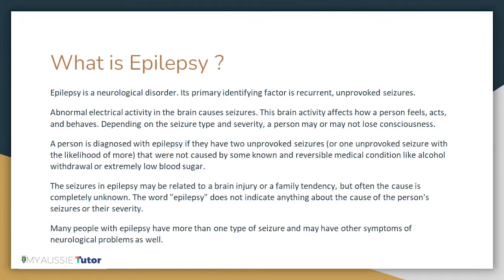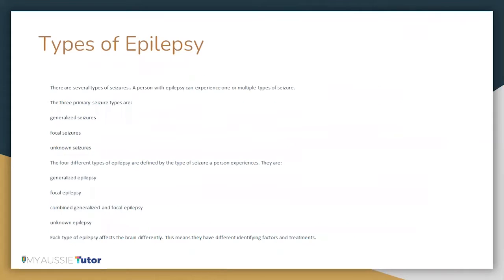The word epilepsy does not indicate anything about the cause of the person's seizures or their severity. Many people with epilepsy have more than one type of seizure and may have other symptoms of neurological problems as well. There are several types of seizures in epilepsy and a person with epilepsy can experience one or multiple types. The three primary seizures described are generalized seizures, focal seizures, and unknown seizures.